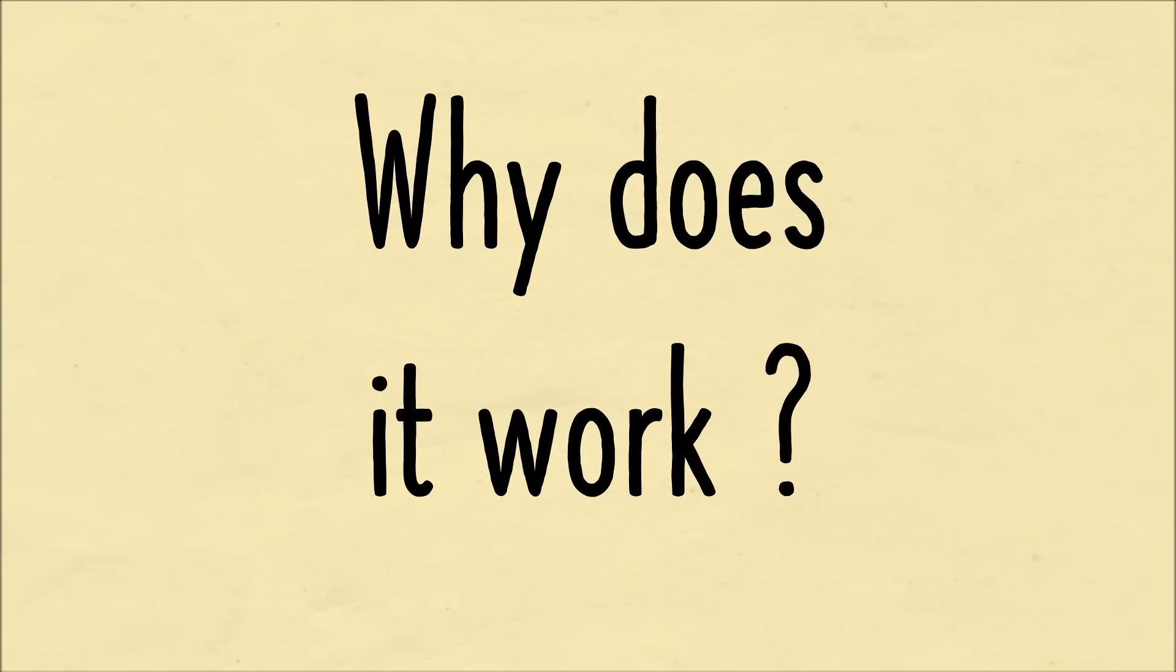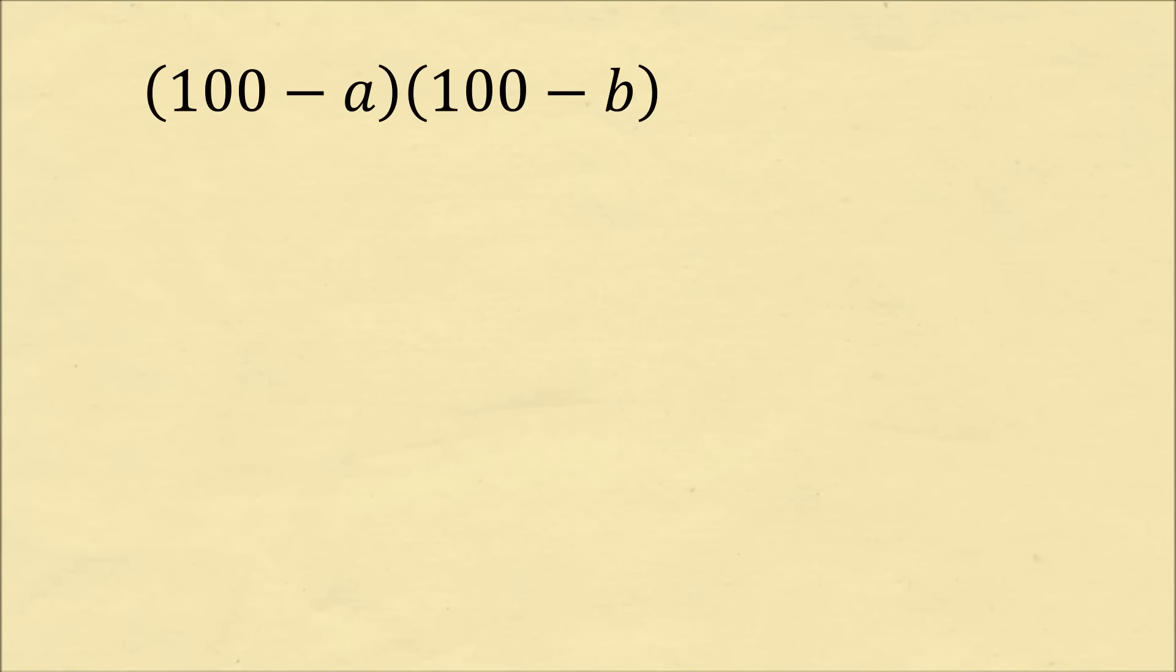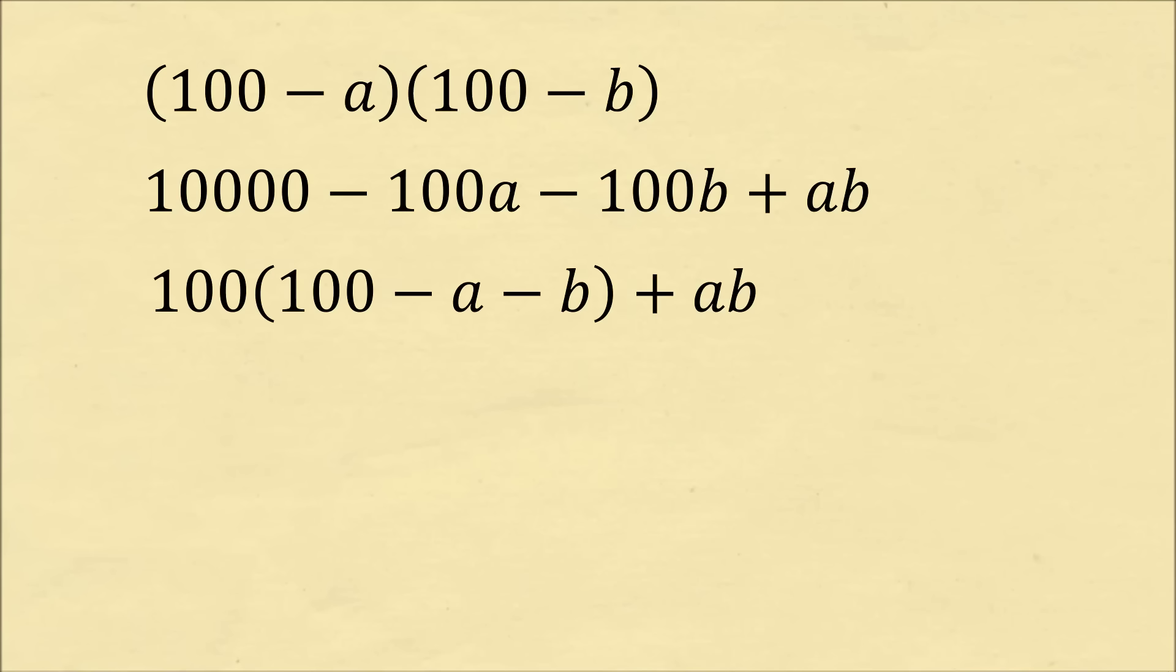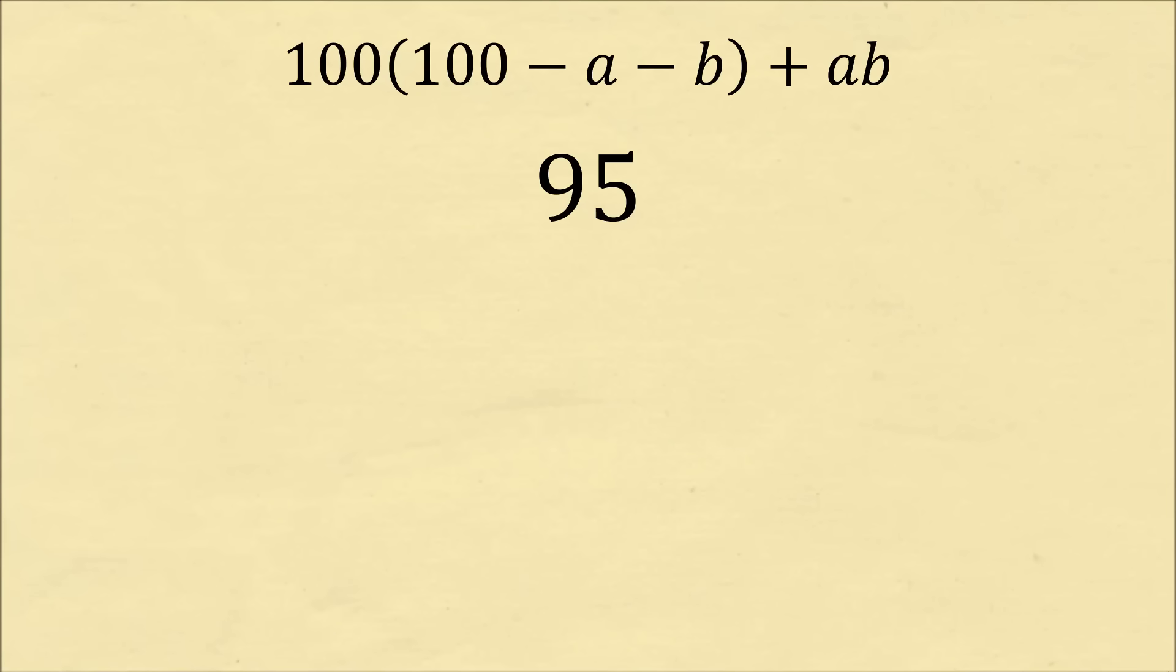At this point, you might be wondering, why does this trick work at all? Let me go through the algebra. So let's say we have two numbers, 100 minus a and 100 minus b, and we want to multiply them together. So let's expand this out. We have 100 times 100, which is equal to 10,000. We then have minus 100a, minus 100b, plus a times b. From the first three terms, let us take a factor of 100. So we have 100 times the quantity 100 minus a minus b, and then we need to add the product ab. So this is the final product of multiplying these two numbers. Let's see how it corresponds to the mental math trick that we're doing.